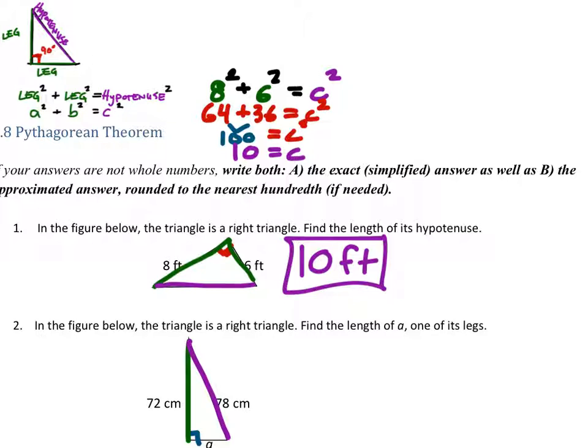So to set this up, I've got the 72 squared, and then the A, and again, it doesn't matter where you put that. 72 squared plus A squared equals the 78 squared. So let's evaluate the 72 squared and the 78 squared.